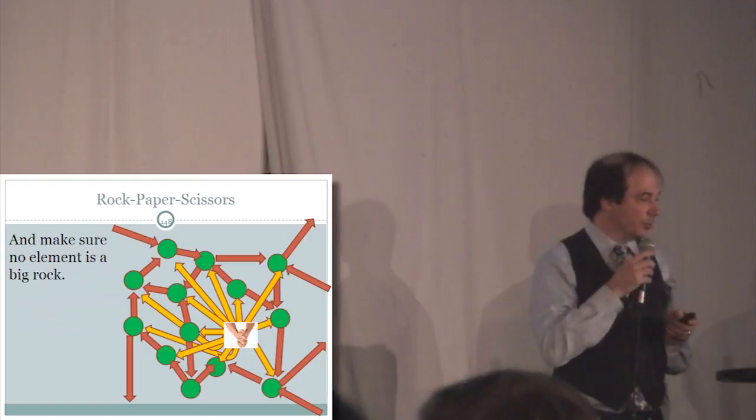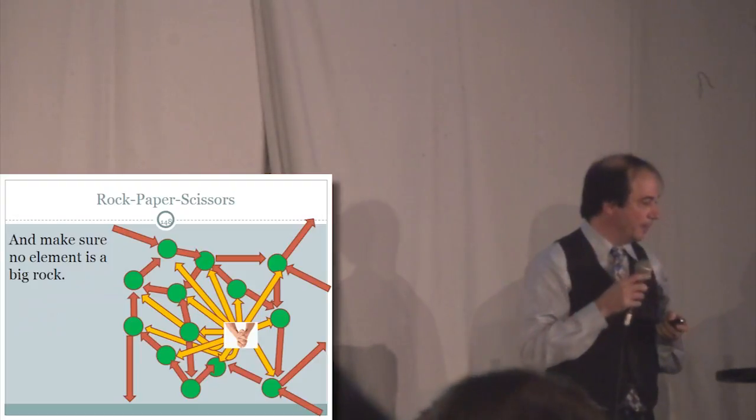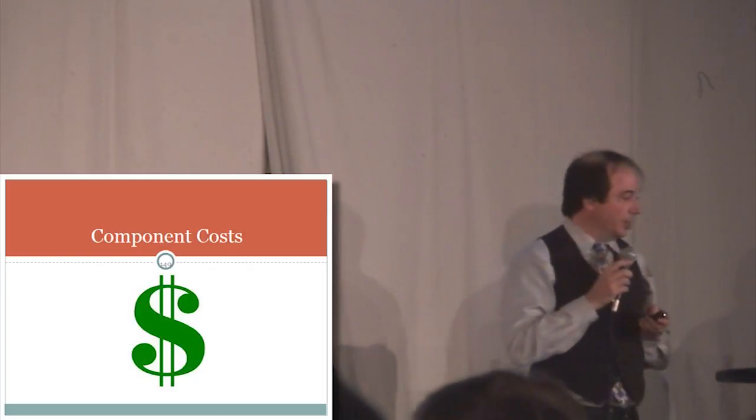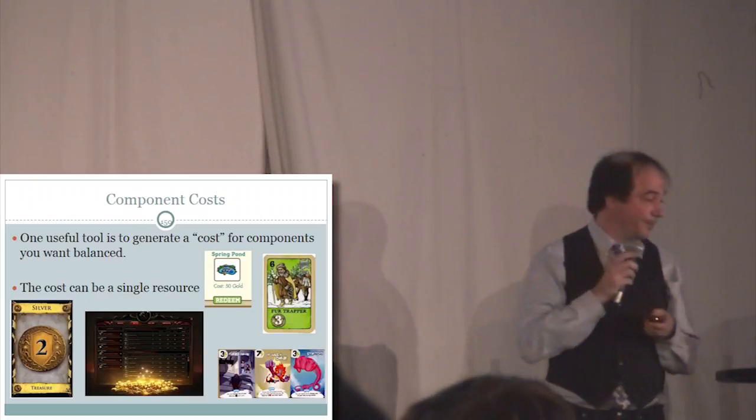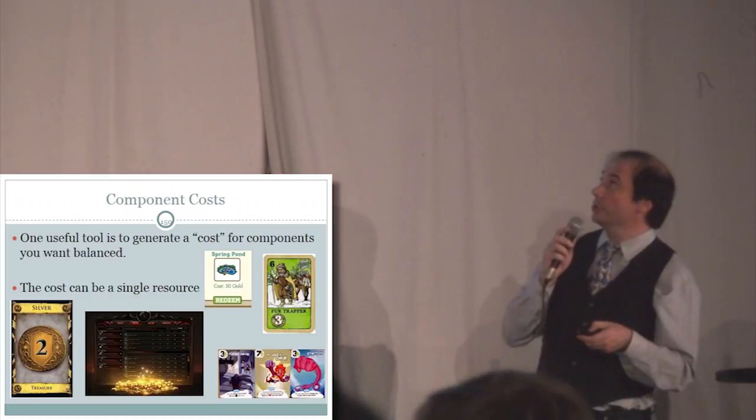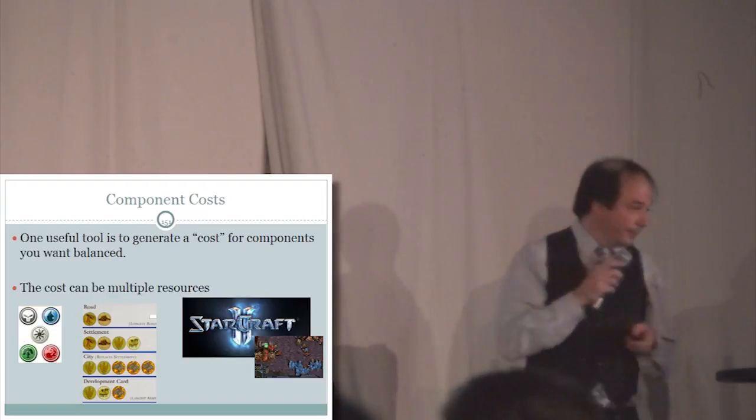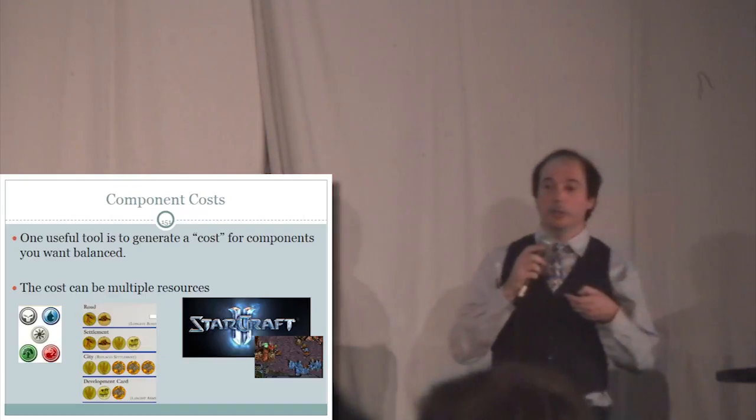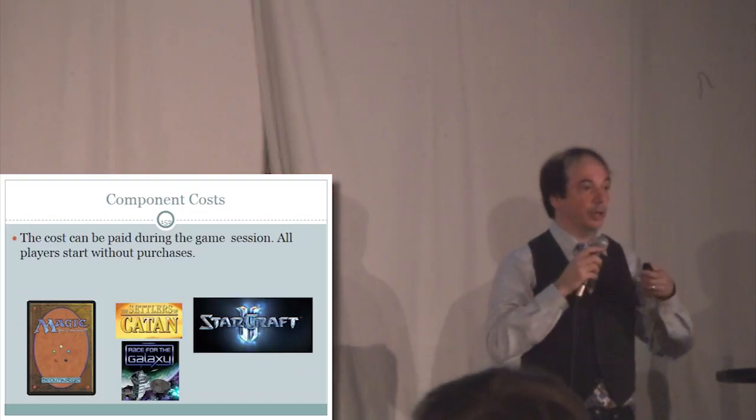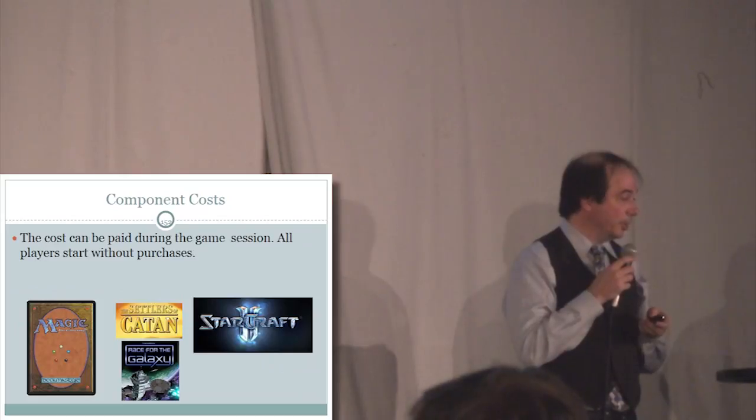Oftentimes you'll get lots and lots of strategies and components with a crazy set of relationships. You just want to make sure that any strategy you don't want to see dominated doesn't have all the arrows pointing in because this strategy is not available. Another technique for balance is component costs. Lots of games have different costs to the components. The component costs can be multiple resources or a single resource. In Magic you've got five different colors of mana. In Settlers of Catan you've got a number of different resources.